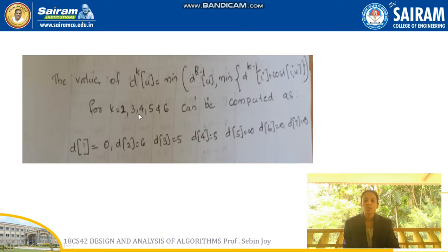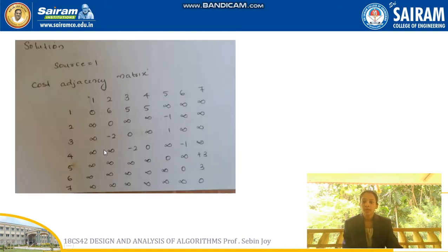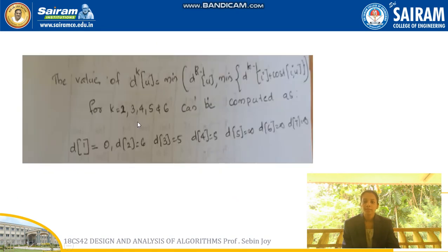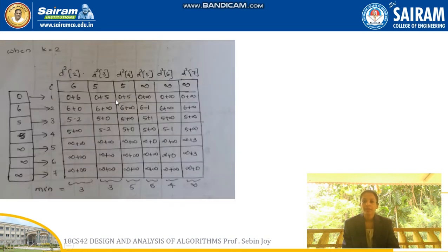Since k=1 is the source, k varies from two to six for the remaining vertices (2, 3, 4, 5, 6). The initialization step uses the row values from the source vertex: D(1)=0, D(2)=6, D(3)=5, D(4)=5, D(5)=infinity, D(6)=infinity, D(7)=infinity, since vertex one is the source.